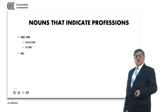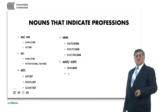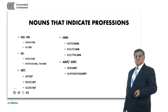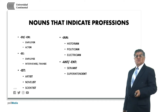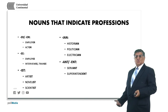For professionals, we add -er or -or: employer, actor. Employee, interviewee, trainee use -ee. Employee is the person that is employed. Interviewee is the person that is interviewed. Trainee is the person that is trained. But employer is the one who employs, and actor is the one who acts. That's the difference between employer and employee: employer performs the action, employee is the one that is employed.